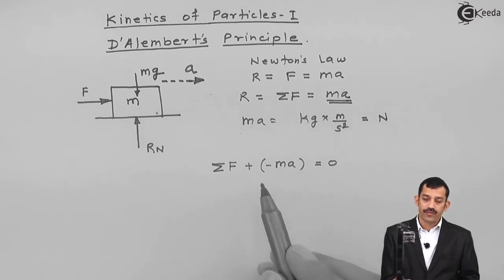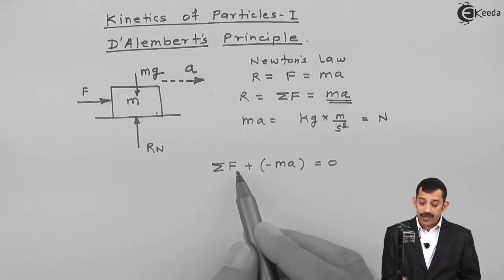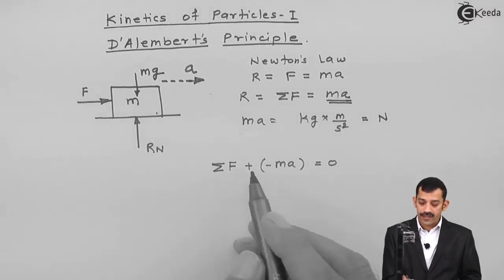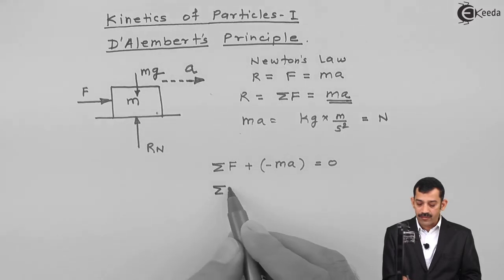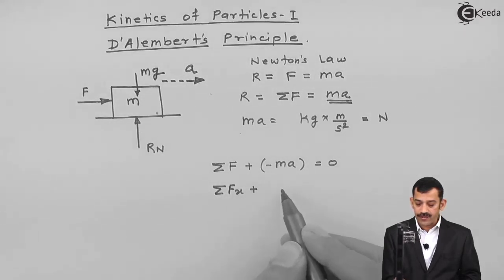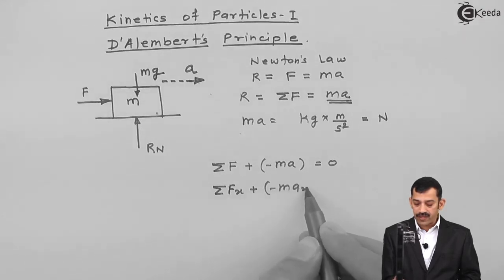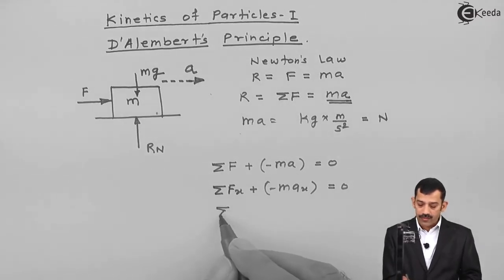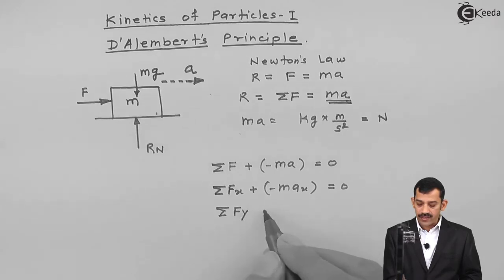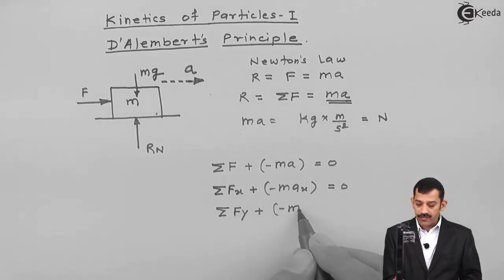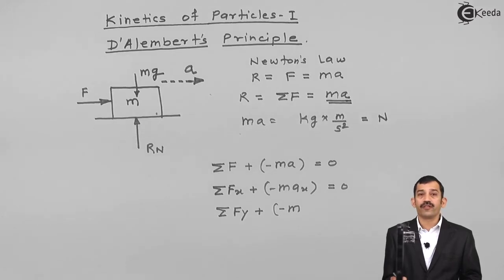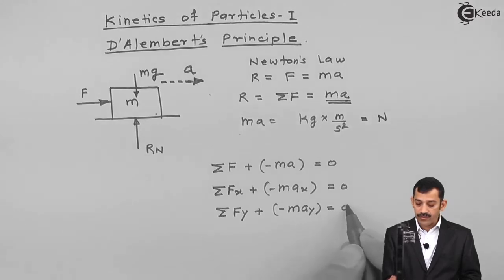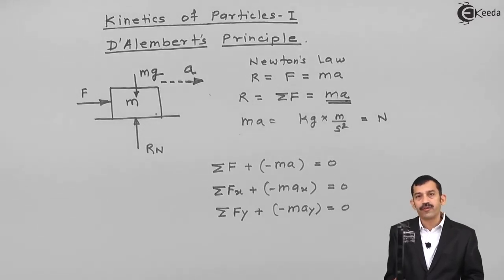This equation includes the inertia force on the same side. If the body accelerates in horizontal direction, this may be written as: summation of forces along x-axis minus mass into acceleration along x-axis equals zero. Or if the body accelerates along y-axis: summation of forces along y-axis minus m times ay equals zero.